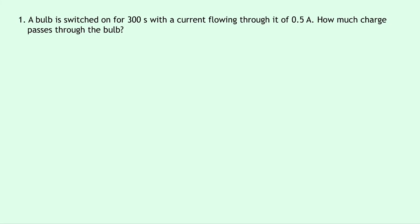Question one says that a bulb is switched on for 300 seconds with a current flowing through of 0.5 amps. How much charge passes through the bulb?